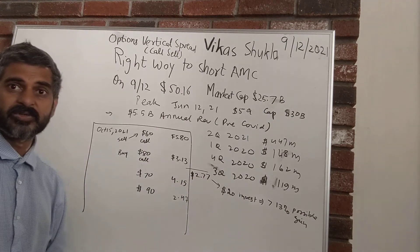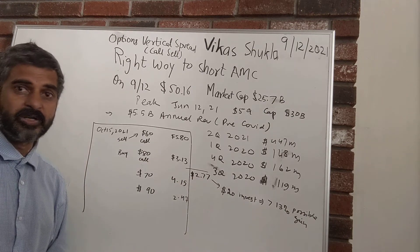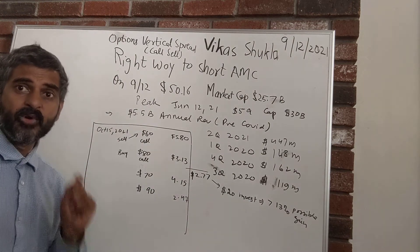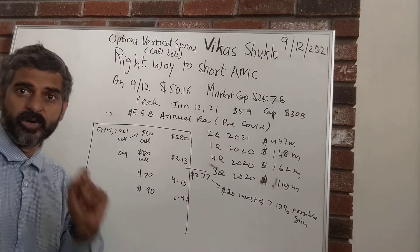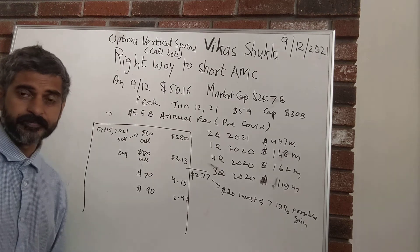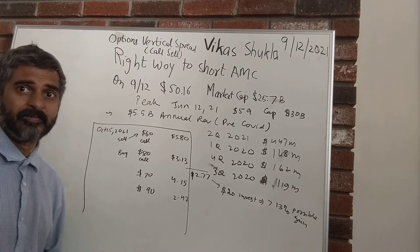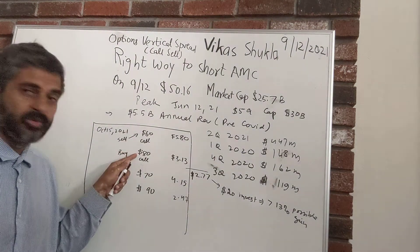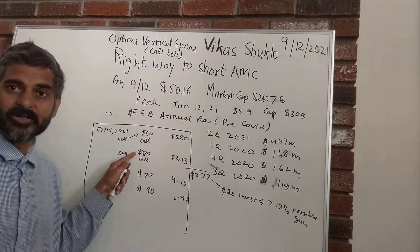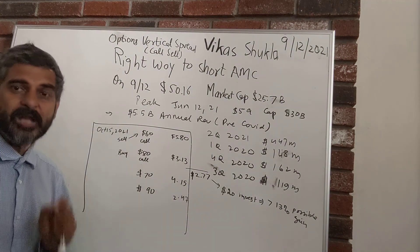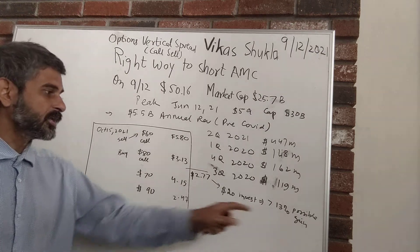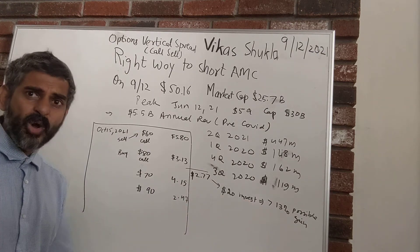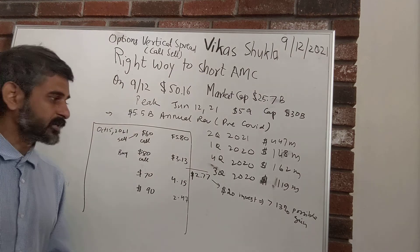That's close to 13–14% gain in one month, which is a good return. But the caveat is: if the stock goes to $80 or beyond, you could potentially lose the $2,000 you put up as collateral.